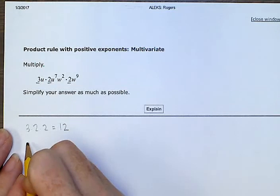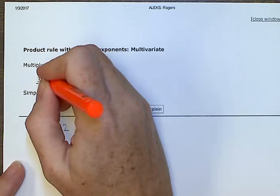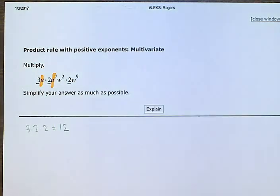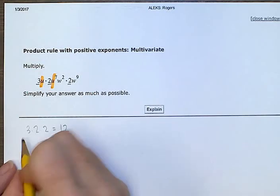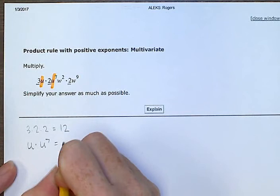Now let's look at all the u's. 1u, 7u. Let's multiply those together. U times u to the 7th equals u to the 8th.